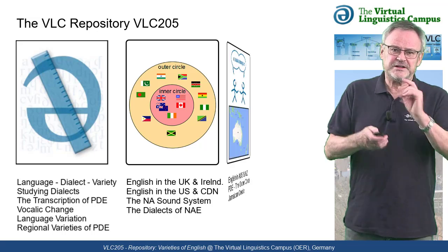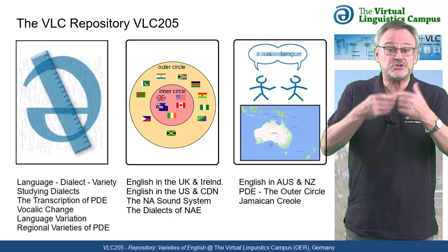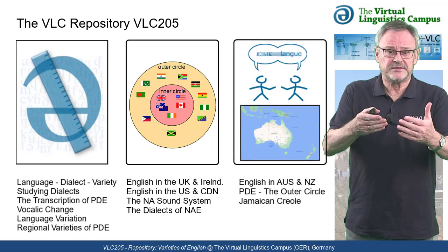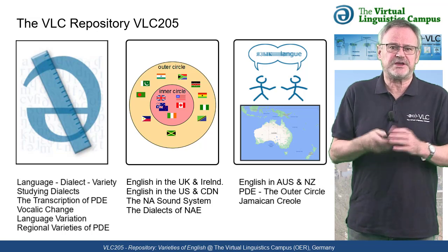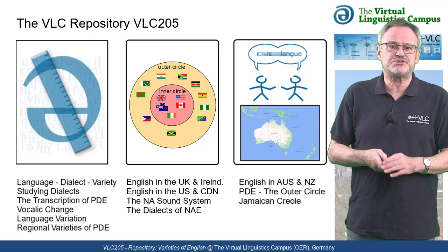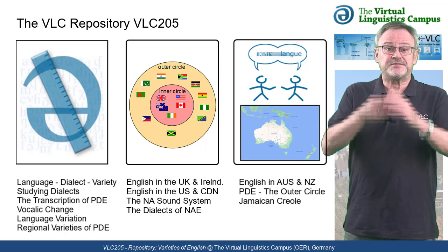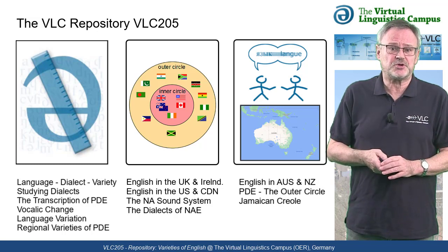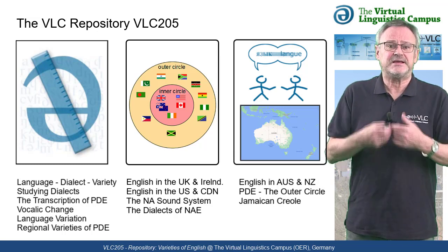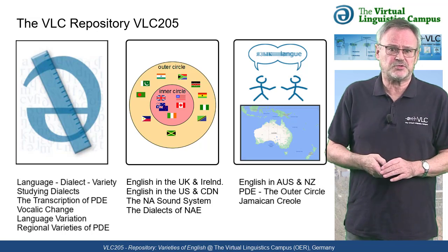The final part of VLC 205 looks at English elsewhere, dealing with those non-native varieties where English is used as a second or official language, and at those varieties where English made contact with other languages, that is English-based pidgins and creoles.